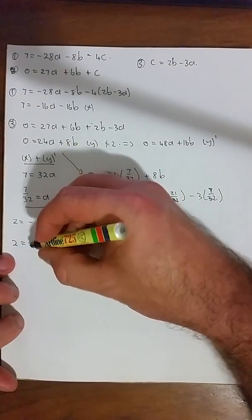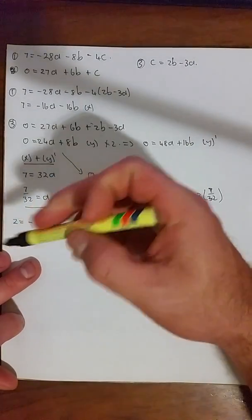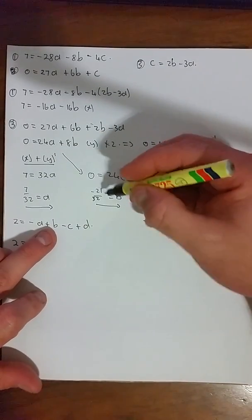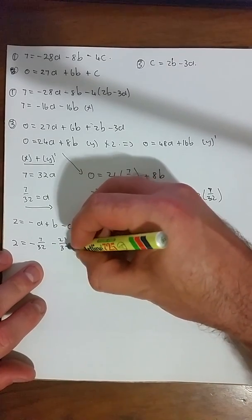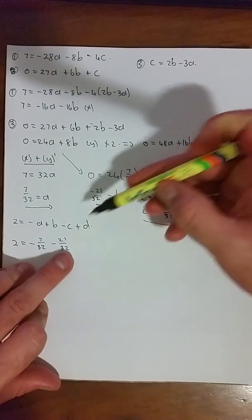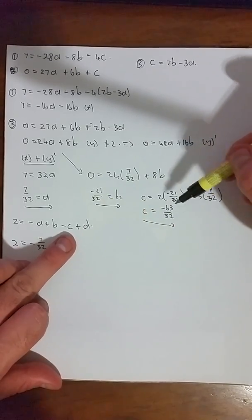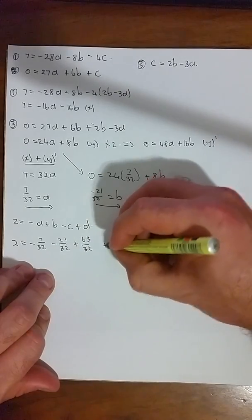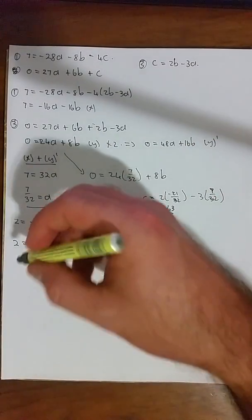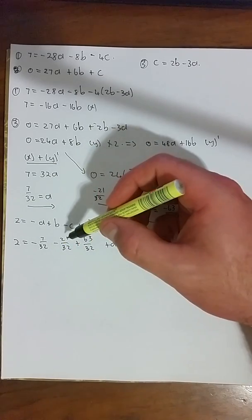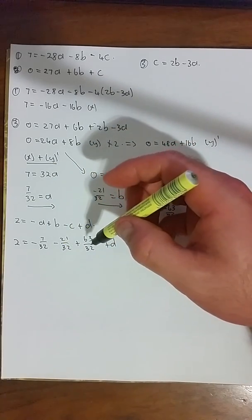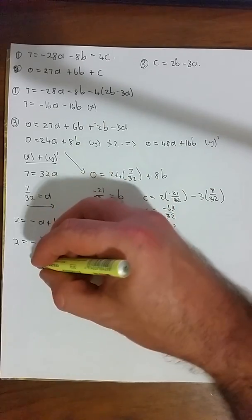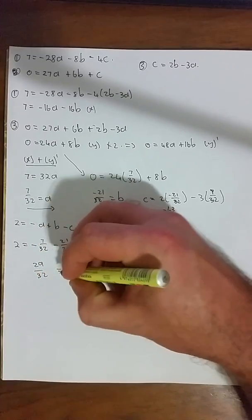Again, rewrite that as 2 = -, and a is 7/32, plus b, which is -21/32, minus c, which is 63/32, plus d. And again, if you take 2 + 7/32 + 21/32 - 63/32, what are you left with? You are left with 29/32 = d.